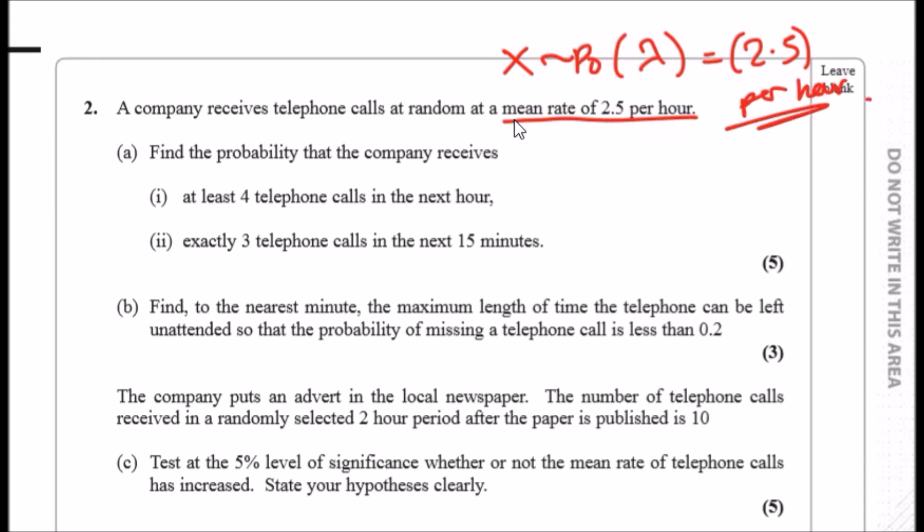Now part (a): find the probability that the company receives at least four telephone calls in the next hour. So this implies the probability that x is at least greater than or equal to four in the next hour with this parameter here. To use a table directly we need to rewrite it in the less than or equal form. So if it's greater than four then we can just say the reverse, which is one minus x less than or equal to three, because this is four onwards, we want three backwards.